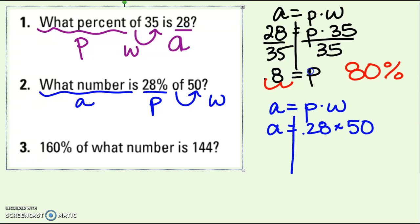Here, the variable's already by itself, so I just have to do 0.28 times 50. And I did that wrong. But I get A is equal to 14. So 14 is 28 percent of 50.